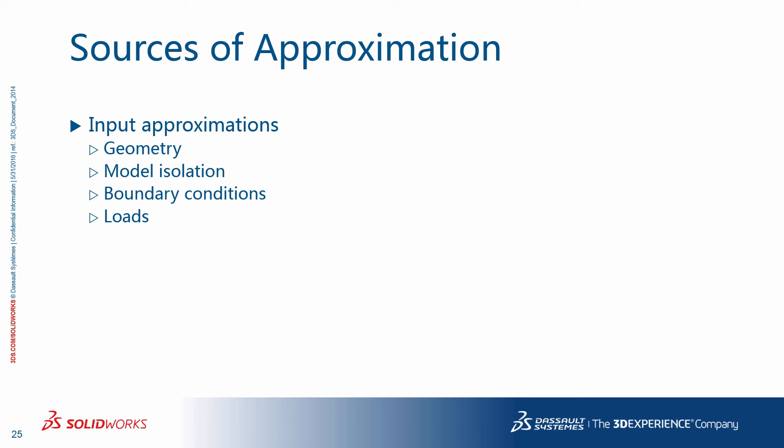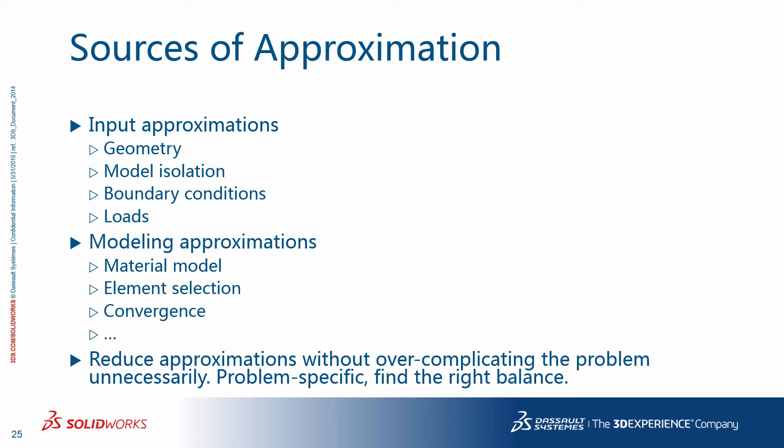There are different sources of approximation you have to be aware of. On the input side, you can think of geometry simplifications, model isolation, boundary conditions, and loads. On the modeling side, you can think of things like material model, element selection, convergence, and so on. You want to reduce these approximations and preserve accuracy without making things unnecessarily complicated. Where to strike the balance, it is problem specific and only you would know.